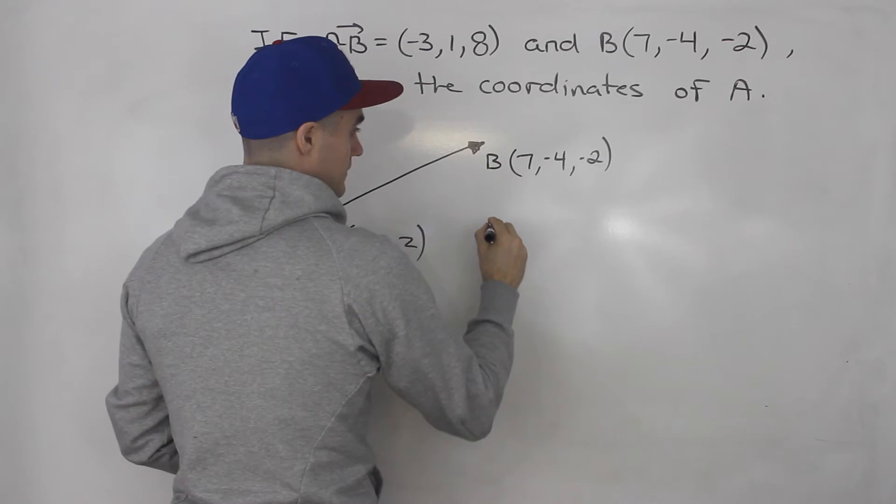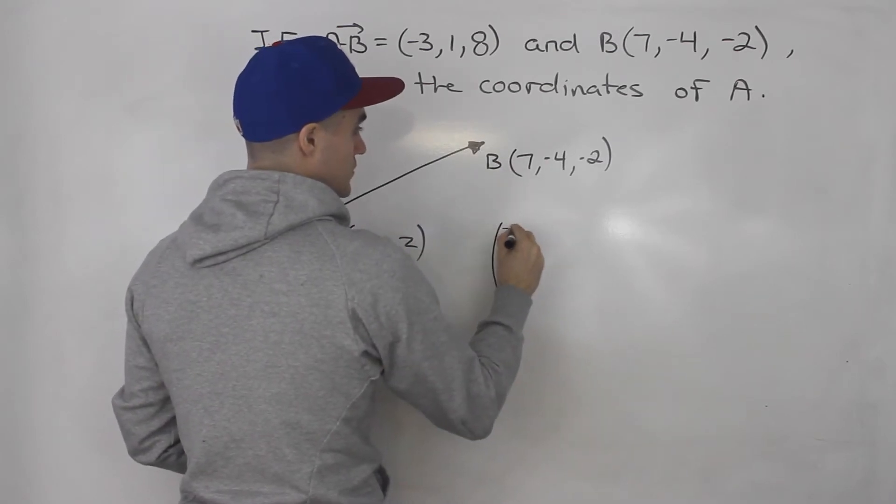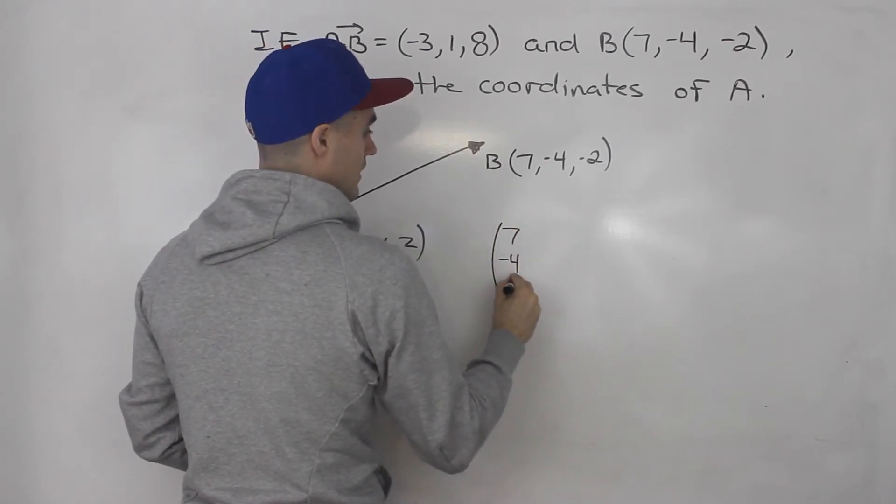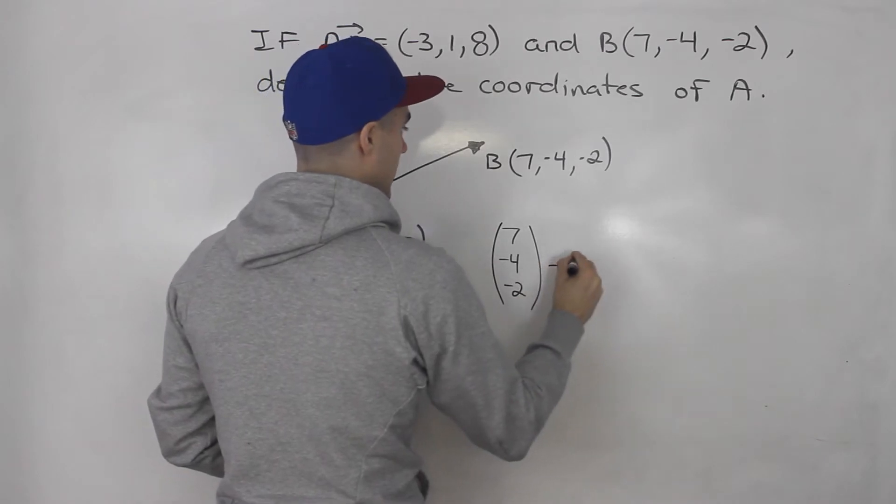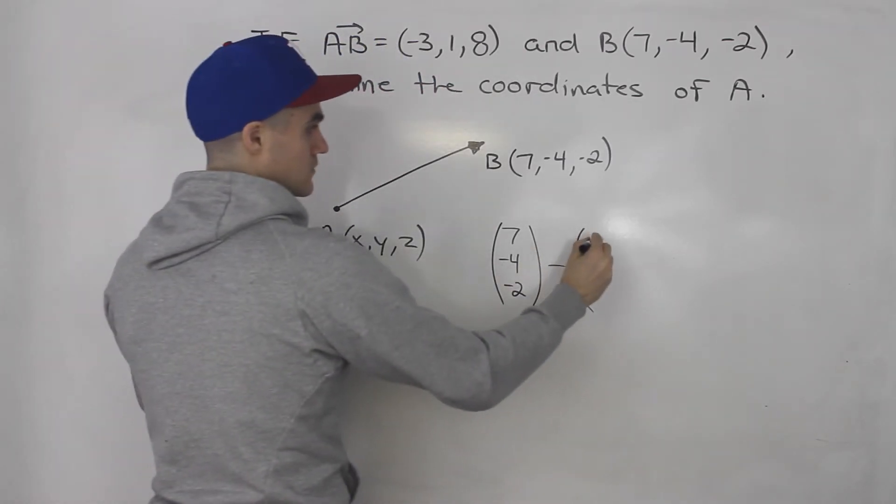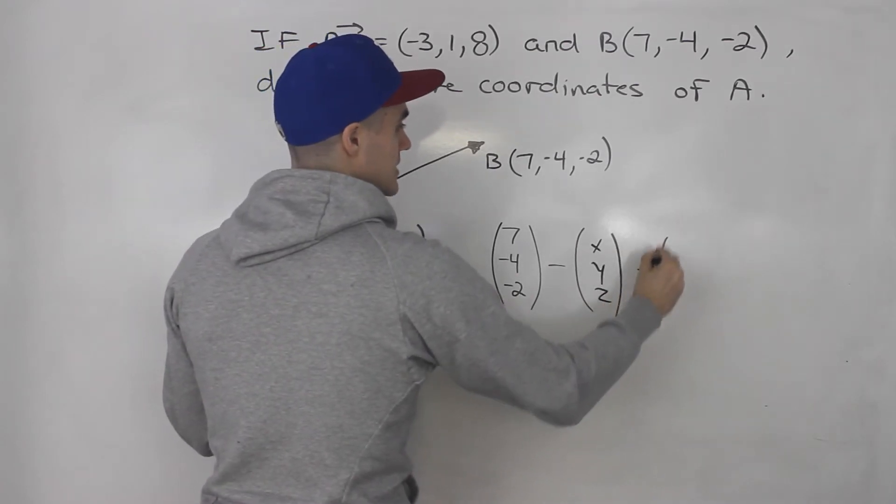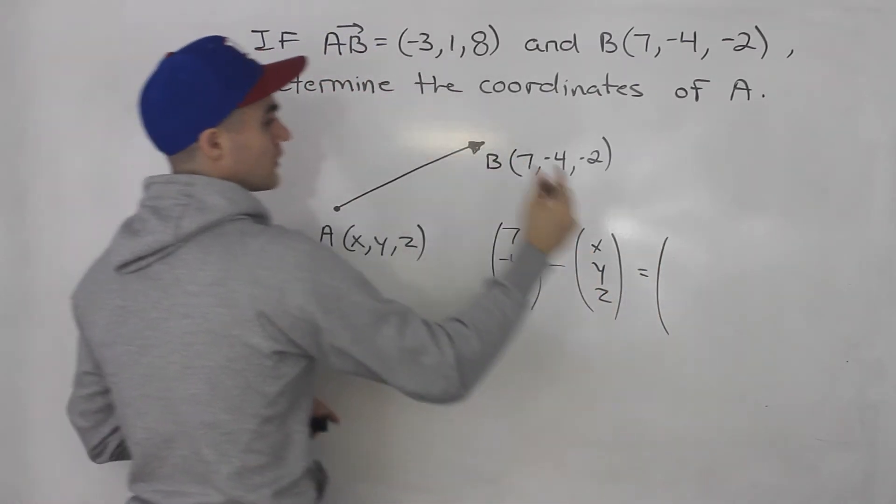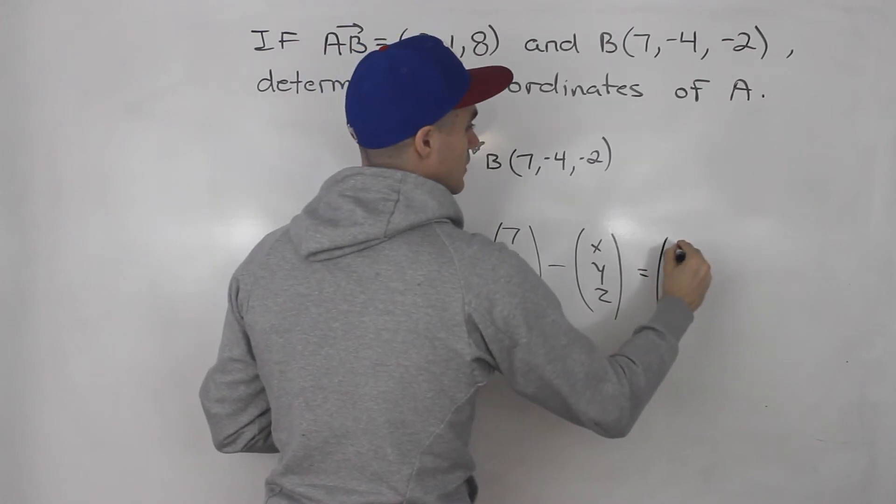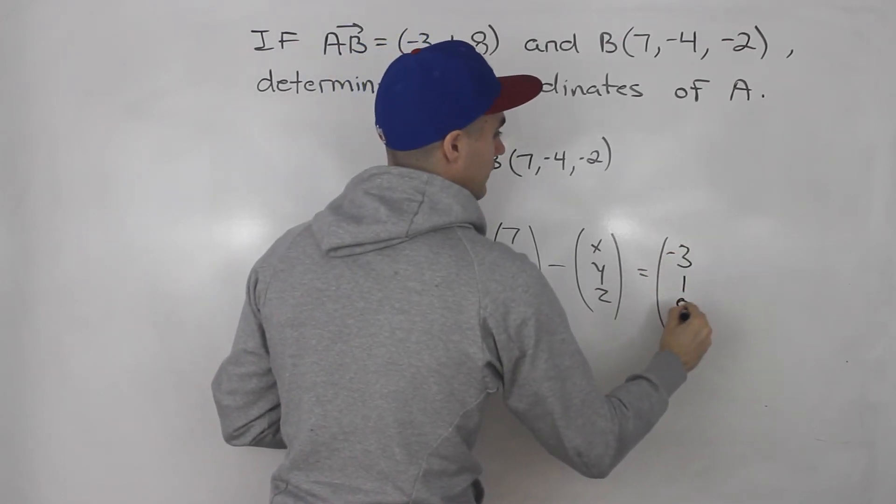So basically, vector B, which is (7, -4, -2), minus vector A, which is (x, y, z), we are finding that, has to equal the components (-3, 1, 8).